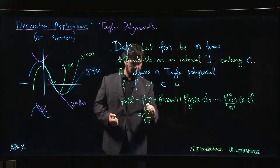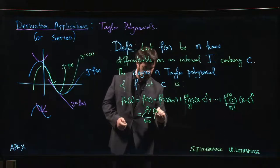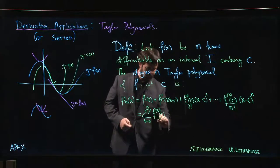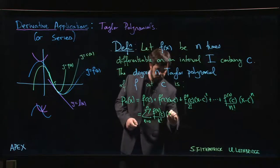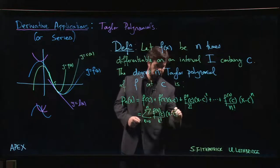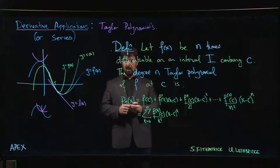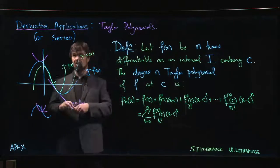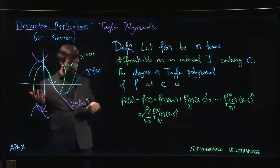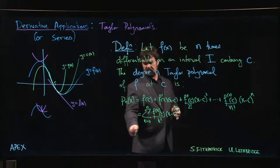The sum k going from zero to n of the kth derivative at c divided by k factorial times (x-c) to the k. For those of you watching this in the context of sequences and series, you've seen power series and you can probably guess what's going to happen next.